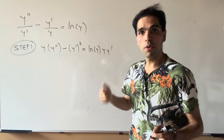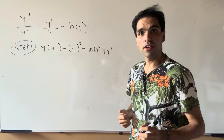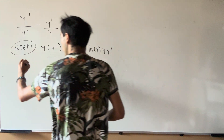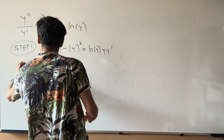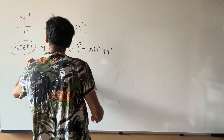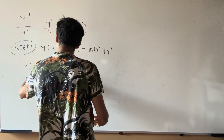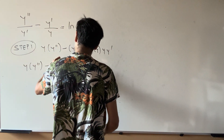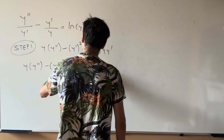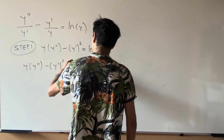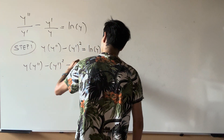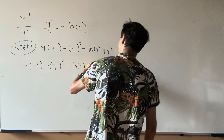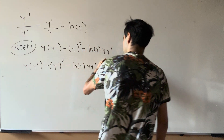Then you can put the ln term on the left-hand side and you end up getting: y times y double prime minus y prime squared minus ln of y times y times y prime equals zero.